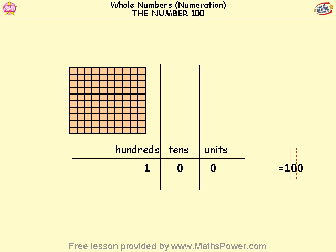We break it up into three columns. The one is in the hundreds column. There are 0 tens in the tens column. And 0 units in the units column.